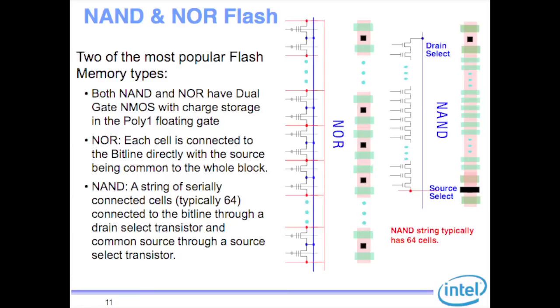When you go to NAND, it's essentially a string of serially connected cells. Current state of the art is about 64 cells per string, with people experimenting with 128. It's connected to a bit line through a select transistor, so you don't really have access to the source or drain of an individual transistor. That was pretty worrisome to me at first — how do you create gigabyte arrays when you can't see a single cell?